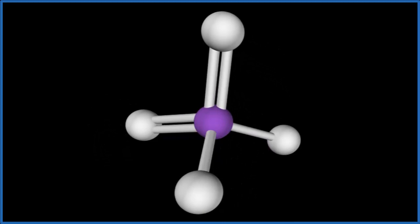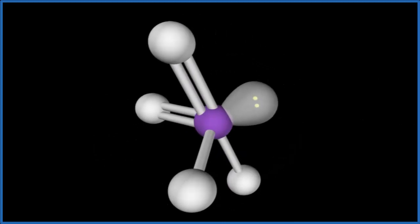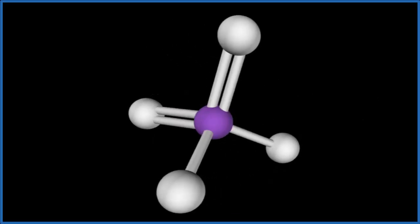It's also the electron geometry. We don't have any lone pairs. If we had a lone pair, that would change things, but we don't. So it's tetrahedral.